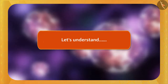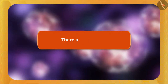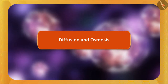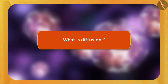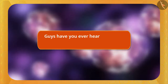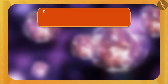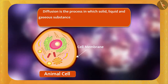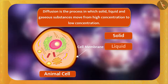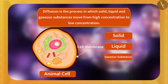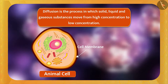So, particles move through the cell envelope in two ways: diffusion and osmosis. Diffusion is the process in which solid, liquid, and gaseous substances move from high concentration to low concentration.